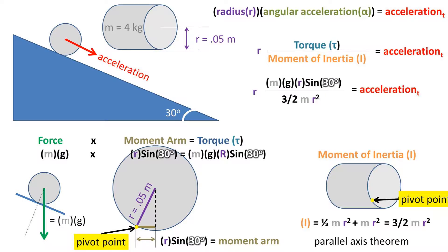Now, we can plug our torque equation and our moment of inertia equation into the radius times the torque divided by the moment of inertia formula. This all equals the tangential acceleration of the cylinder. Reducing this yields two-thirds times gravity times the sine of the angle equals the acceleration tangential to the outside edge of the cylinder.